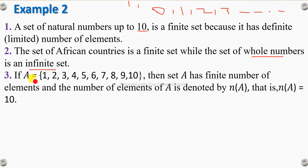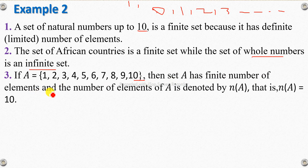So if A is {1, 2, 3, 4, 5, 6}, we can see that A has a finite number of elements. A is denoted by n(A), which gives the number of elements of A.